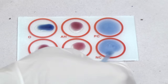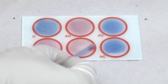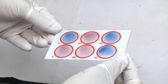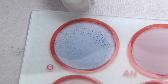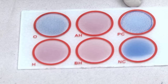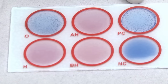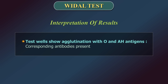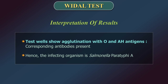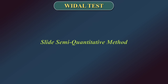Mix the contents of each circle uniformly over the entire circle with separate mixing sticks. Rock the slide gently back and forth and observe for agglutination macroscopically at 1 minute. Agglutination is a positive result indicating presence of the corresponding antibody; absence of agglutination is a negative result. As the test results show agglutination with O and AH antigens, Salmonella paratyphi O and H antibodies are present in the patient's serum, indicating the infecting organism is Salmonella paratyphi A.